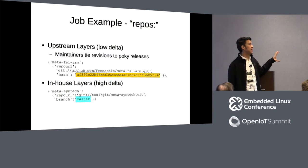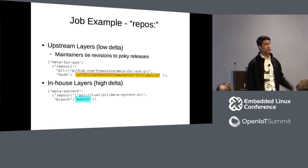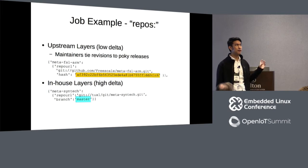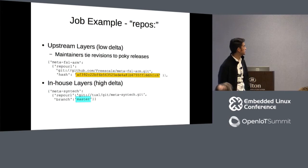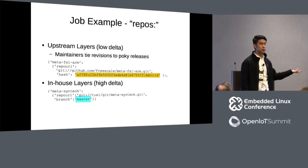Translating those git diagrams into our configuration file: for meta-fsl-arm we specify the source rev hash — that's our fixed version. For certain projects you could specify a branch like 'dora', but you actually want to control it more tightly. So for all upstream layers we use the hash, and our in-house layers use the master branch because they're always moving. When you specify master, it just goes to your local git repository and grabs the head.